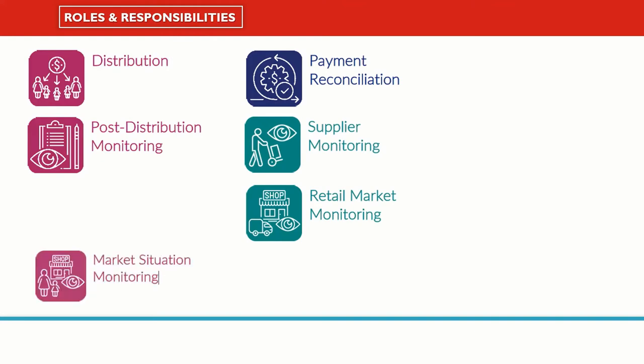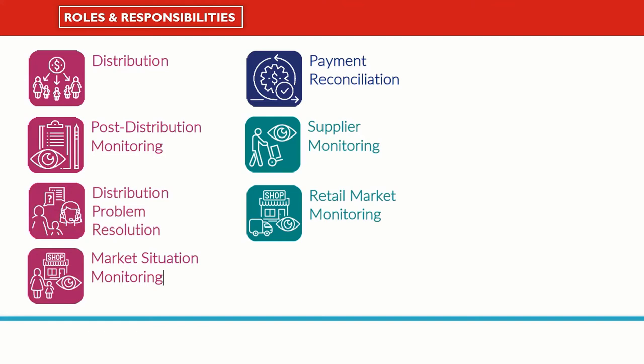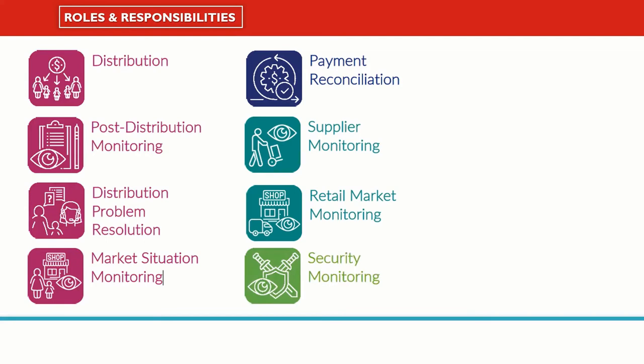The program team might also be monitoring the market situation to see if the market is able to deliver the program objectives as anticipated. There may be some distribution issues that need to be resolved, which might be handled by the programs team or logistics and procurement team depending on the type of issue. The security team can provide critical information on the security situation and may have access to information that contributes to context and risk monitoring.